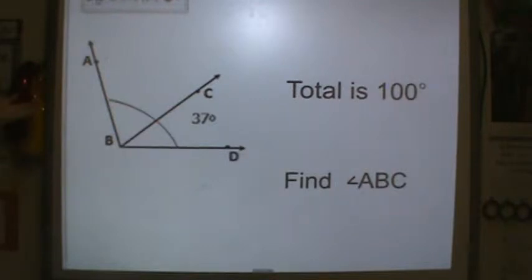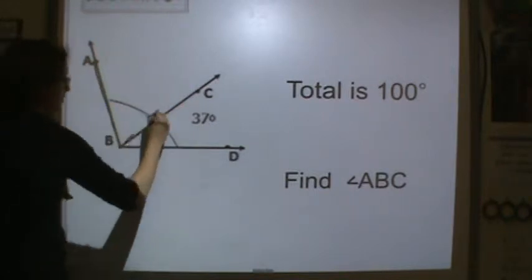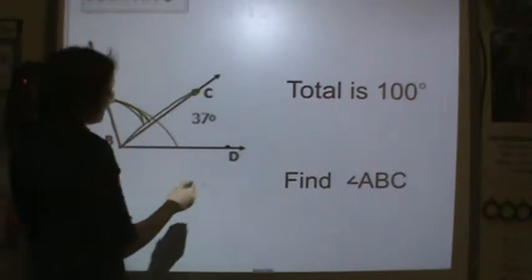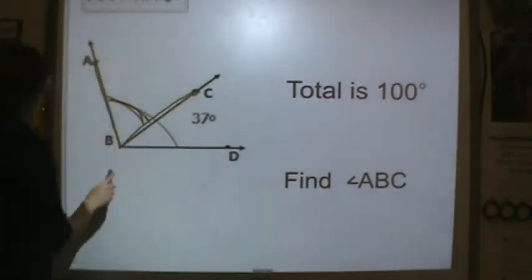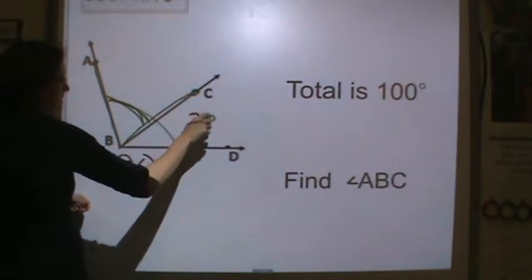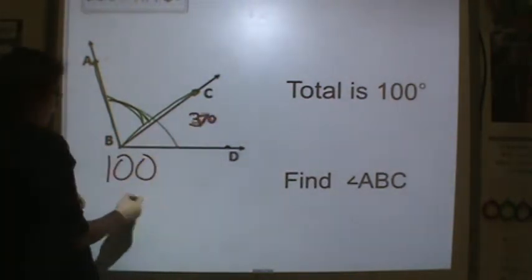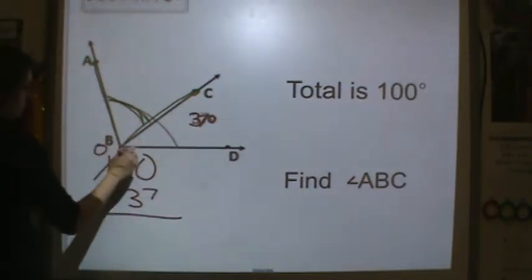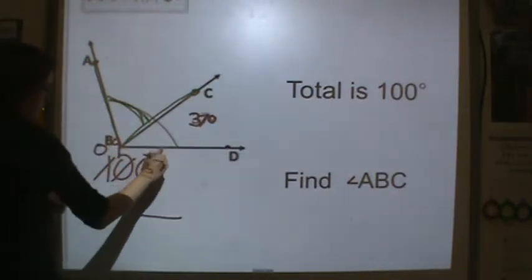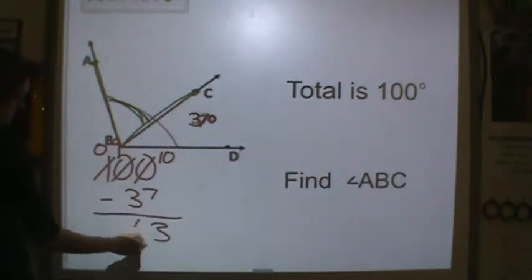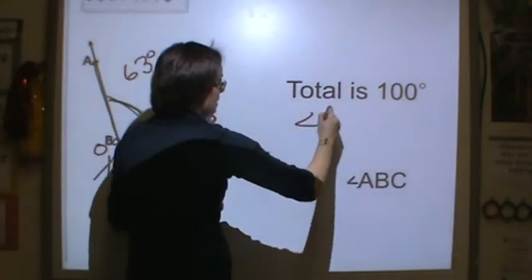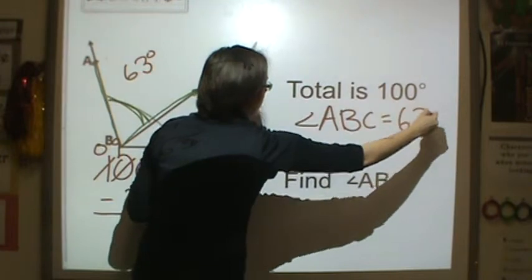Next, it's telling me the total is 100 degrees. Find ABC. So here's A, here's B, here's C. So the missing portion is right here. So I know the total is 100. The part I have is 37 degrees. I know it's a little blurry, so I wrote over it. So 100 minus 37 would give me this missing piece. I need to regroup. So we have 63 degrees. So angle ABC is equal to 63 degrees.